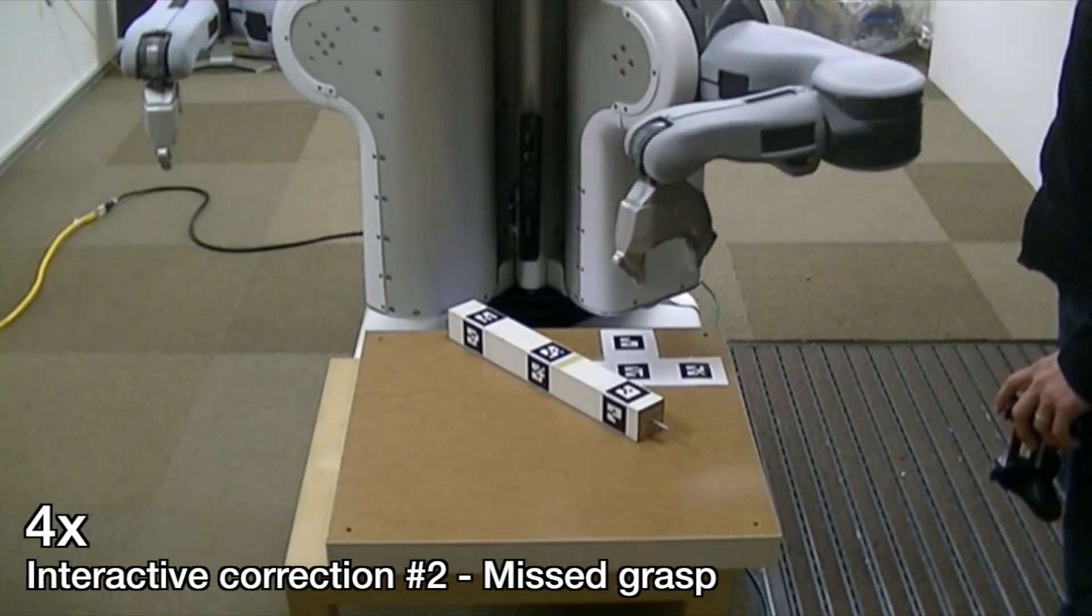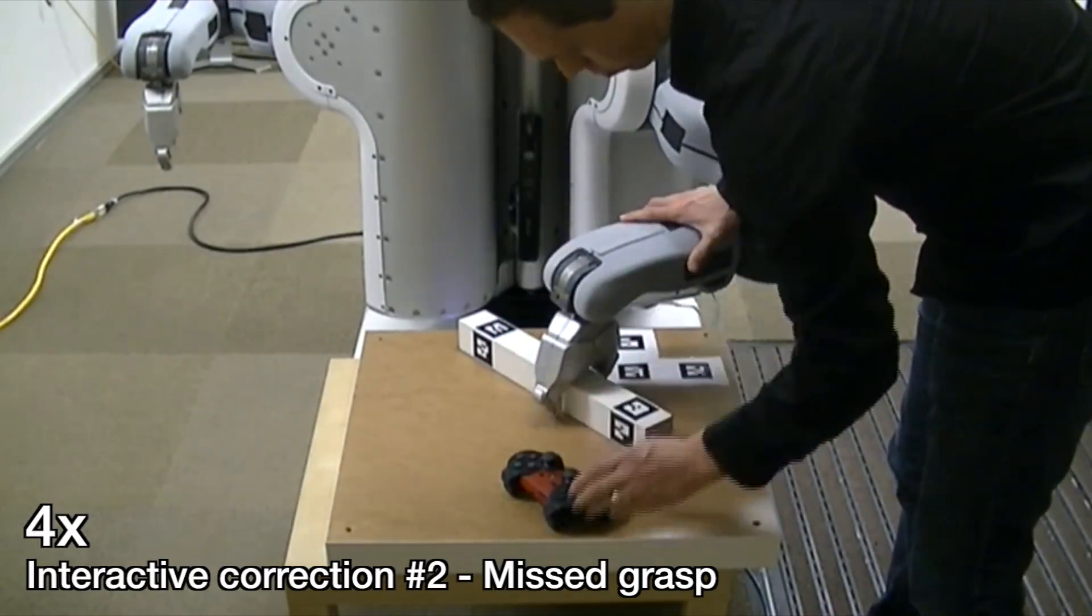Here, the robot misses a grasp, and the user provides another interactive correction, showing it how to retry the grasp.